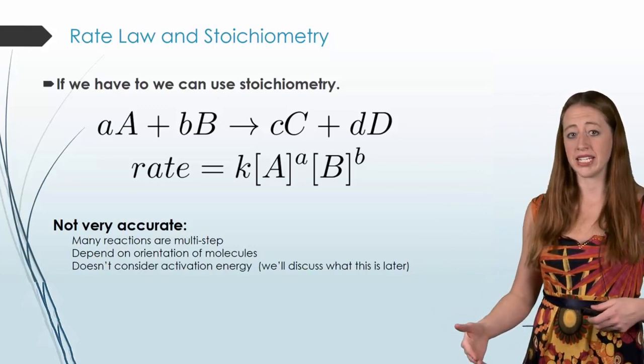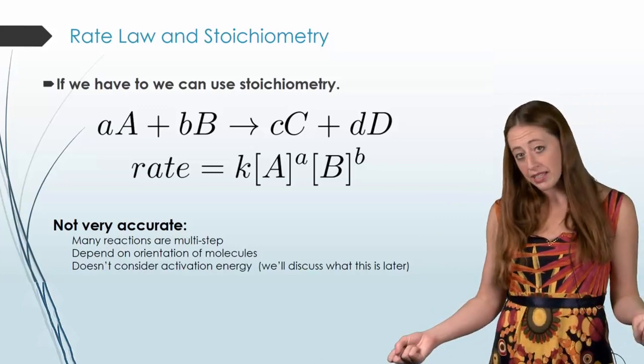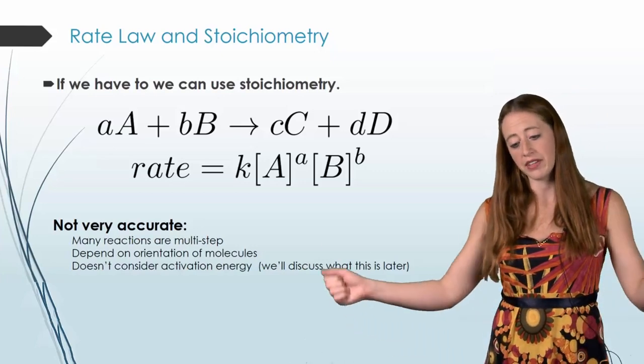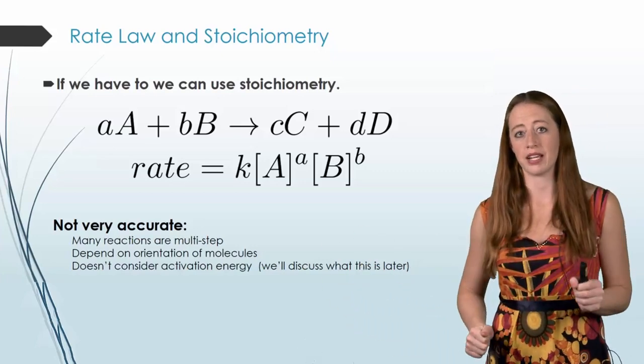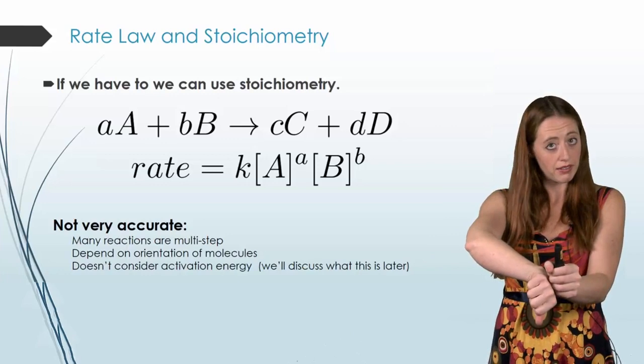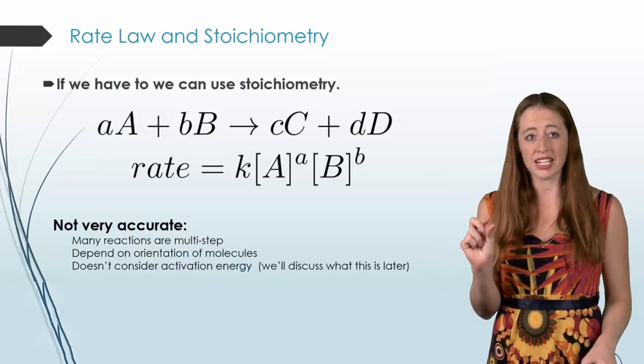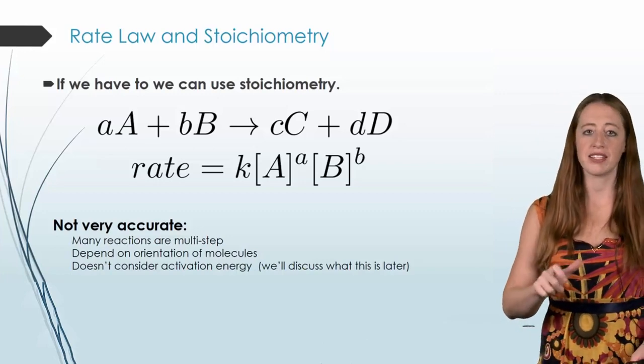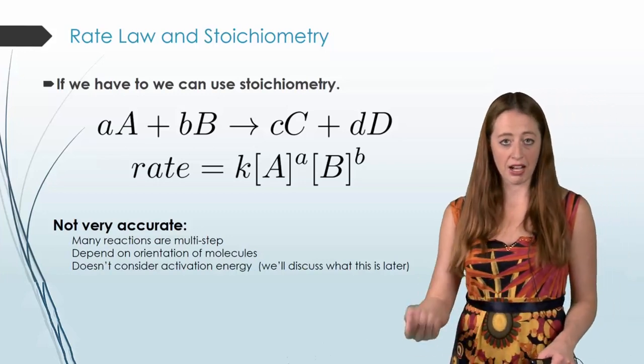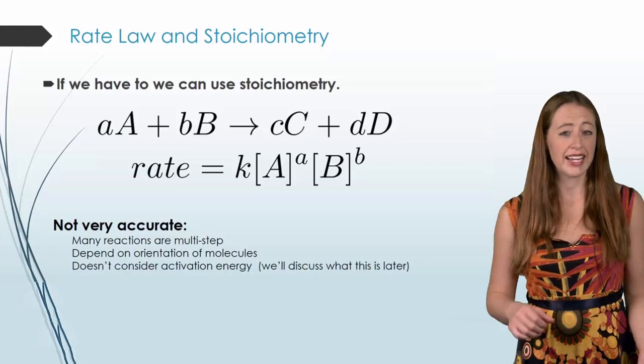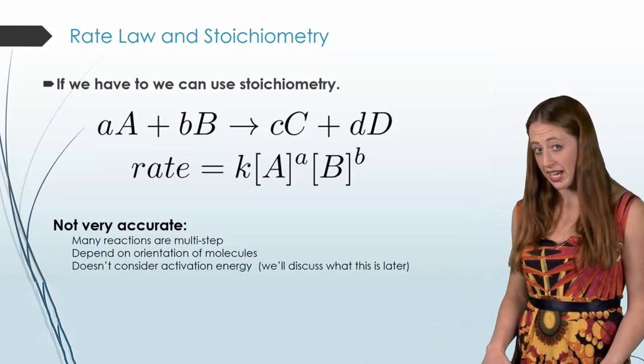Two, a lot of times they depend on orientation. So maybe they're complicated molecules, and if they interact like this, they won't react. But if they interact like this, they will. Or maybe it's really finicky and it has to interact in just one little tiny particular way. All of that is going to play a role on how fast the reaction happens and how much of each concentration you have to have.